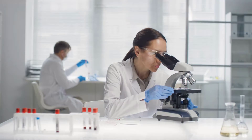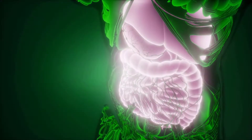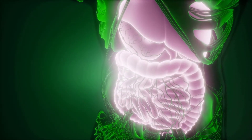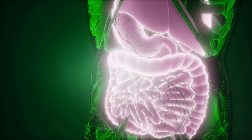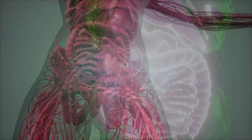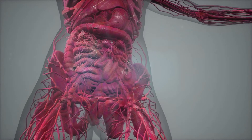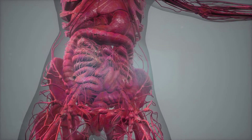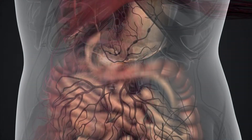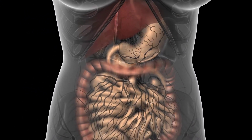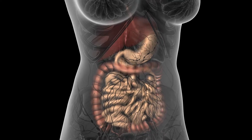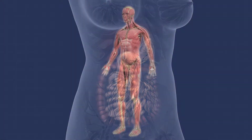Anatomists take two general approaches to the study of the body's structure: regional and systemic. Regional anatomy is the study of the interrelationships of all of the structures in a specific body region, such as the abdomen. Studying regional anatomy helps us appreciate the interrelationship of body structures, such as how muscles, nerves, blood vessels, and other structures work together to serve a particular body region.